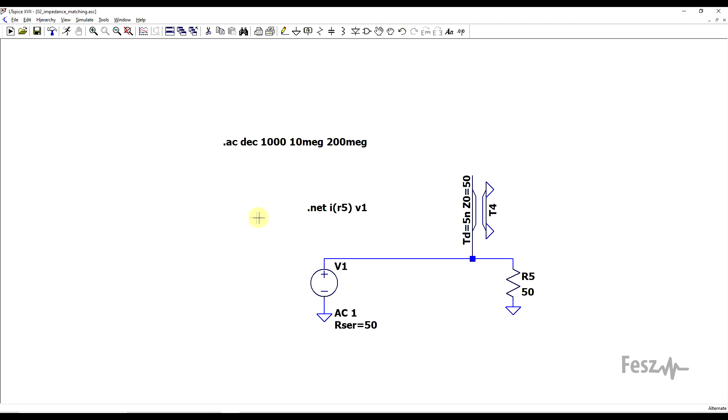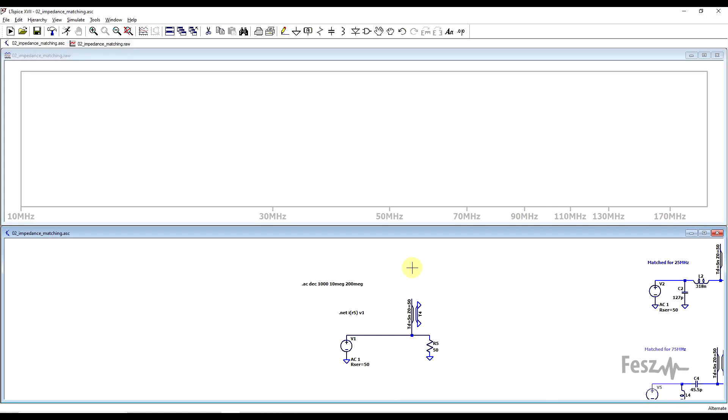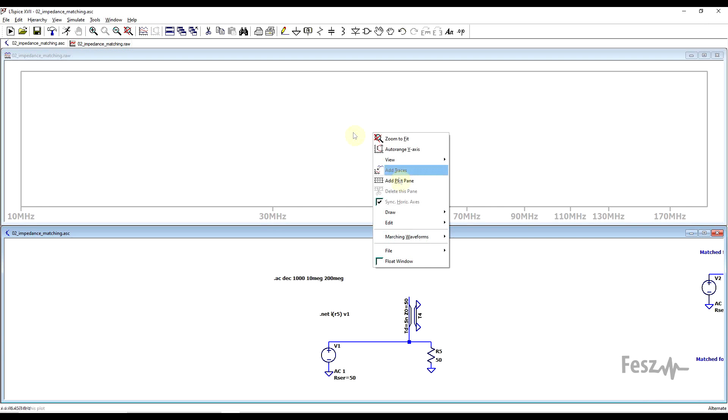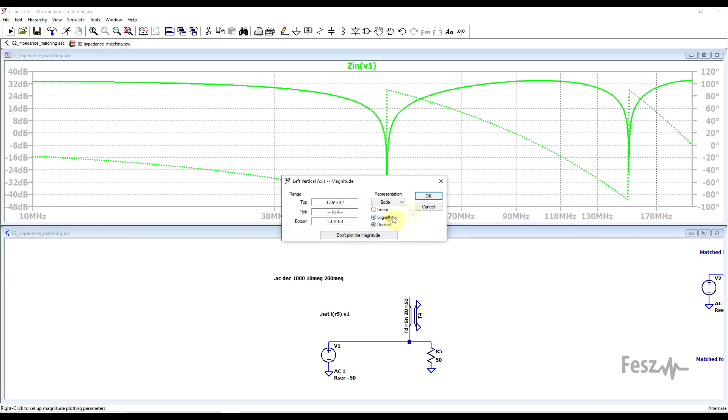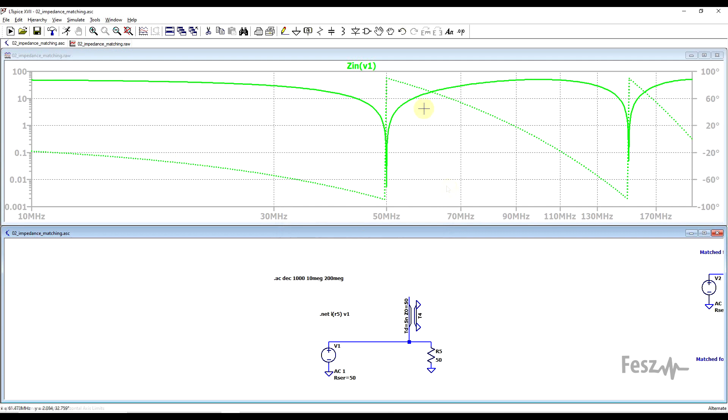So the thing is that even though this sort of filter will create a nice notch at one frequency and it has no influence at another frequency, everywhere else it presents a complex impedance. We can easily observe this using a .NET statement. So when we simulate, we can right-click on our plot plane and add the trace of input impedance as seen from the V1 signal source side. So by default, we can observe the impedance in polar form, so we see here that there is a clear imaginary component as shown by the non-zero phase shift.